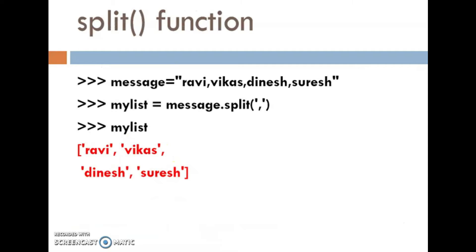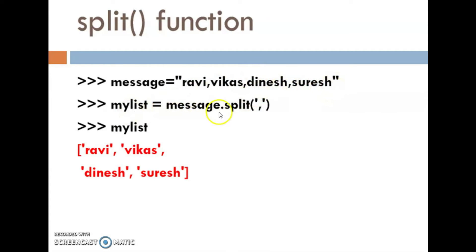Check this one. Message is equal to, within this double quote, I used Revi, Vikaas, Dinesh, Suresh. My list is equal to message.split. I pass this delimiter — comma.